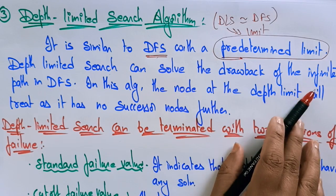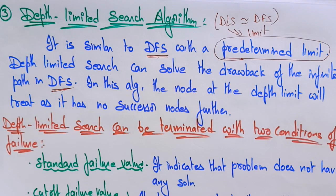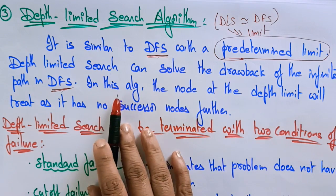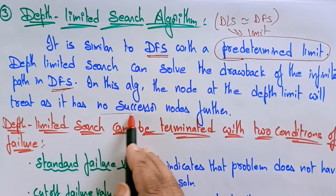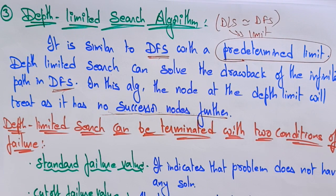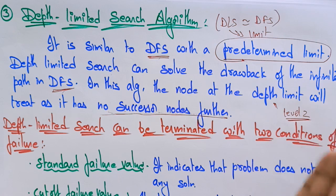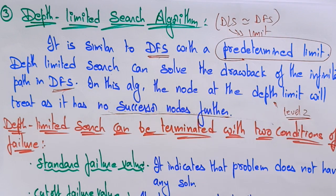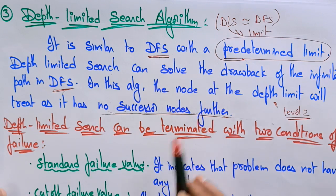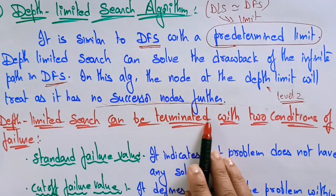The depth limited search can solve the drawback of infinite paths in DFS. In this algorithm, the node at the depth limit is treated as having no successor nodes further. For example, if the limit is level 2, searching stops there. Whether the goal is reached or not is secondary — if found within the limit, good; if not, we stop and assume there are no successor nodes further.